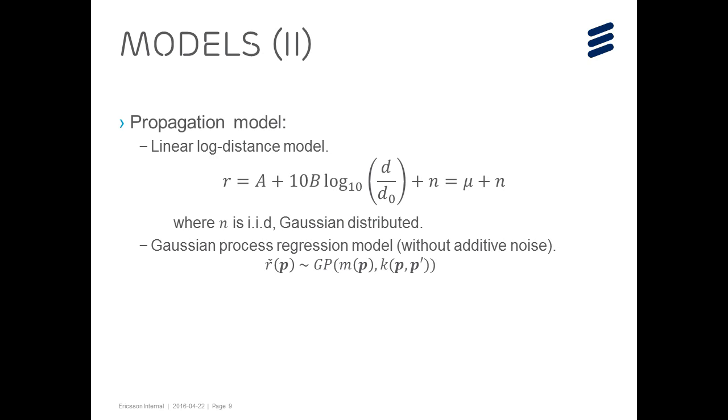Traditionally, the linear log distance model is used to relate the distance to the network node to the measured RSS value. However, in the Gaussian process regression model, the measured RSS value is approximated by a Gaussian process, which is fully determined by its mean and covariance functions as given on this slide.